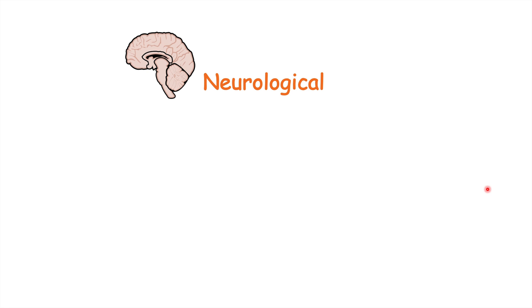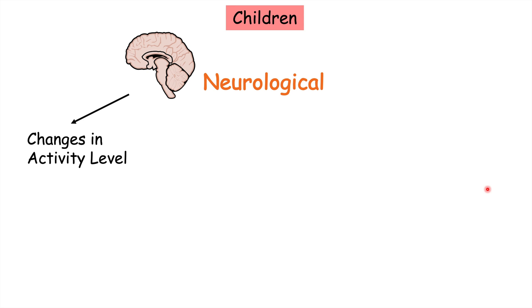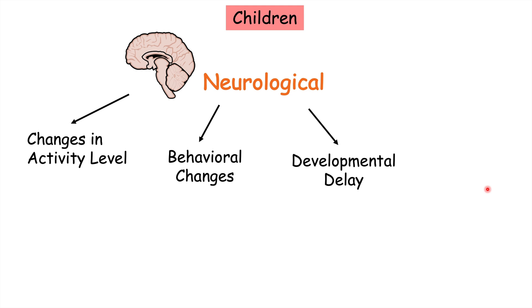There are other neurological features that occur specifically in children. These include changes in activity level — either hyperactivity or a decrease in activity levels — as well as behavioral changes in general. Developmental delay is very important: in very young children, following developmental stages is critical, and if there is developmental delay along with other findings, this may be a sign of lead poisoning. Delayed language ability is also a feature.